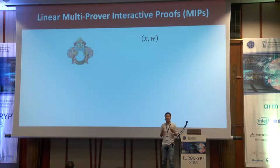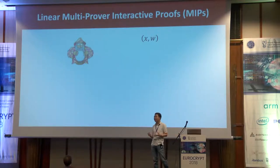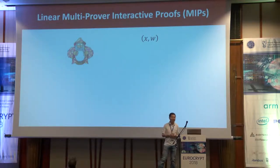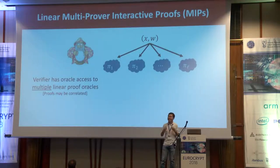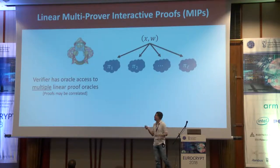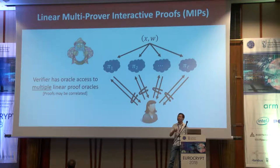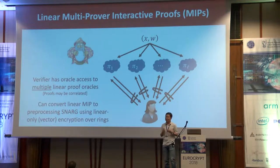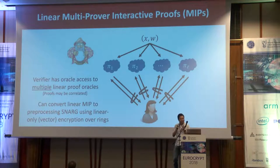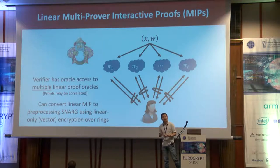This suggests we need to move away from the linear PCP model and look at something more general. The core information-theoretic primitive in this work is a notion called linear multi-prover interactive proof, or linear MIP, introduced in the original work by Ishai et al. In a linear MIP, instead of giving the verifier access to a single linear PCP oracle, we give the verifier access to many independent linear functions π₁ through πₙ. The verifier can interact with all of these independent linear functions and at the end decides whether to accept or reject. We can compile linear MIPs to preprocessing SNARKs using linear-only encryption over vectors rather than individual field elements.